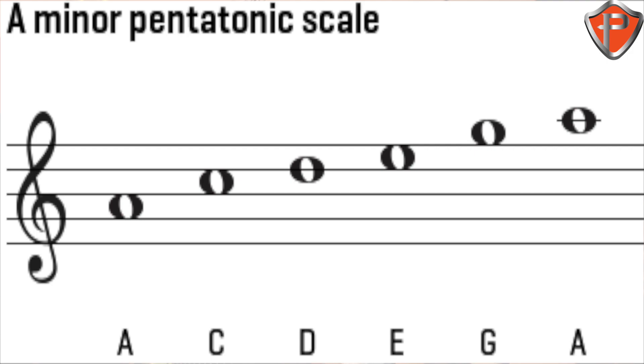Today we're going to learn the A minor pentatonic — this position right here. It's a position every guitar player knows, and if you're a beginner you should know this. So the notes for the A minor pentatonic scale — by the way, 'penta' means five.